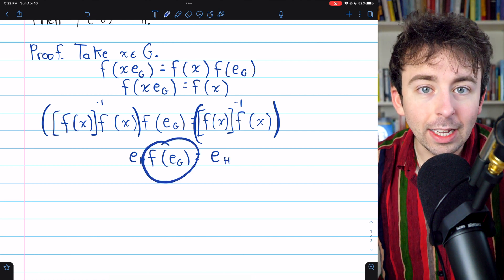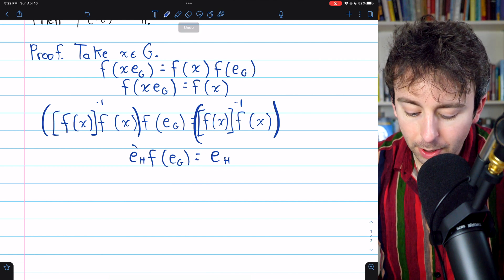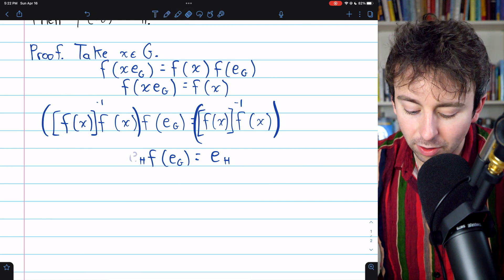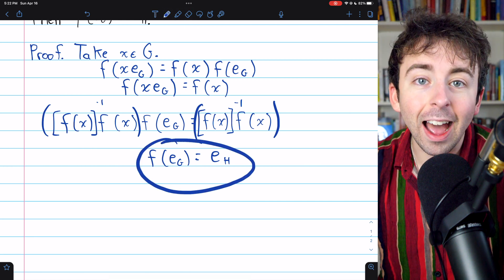Now f of e_G is also an element of H. So when we multiply that by the identity of H, the identity just doesn't do anything. So we can erase it, and we have our desired result.